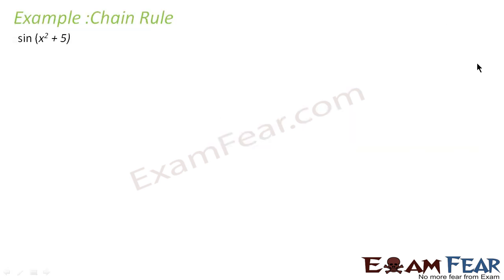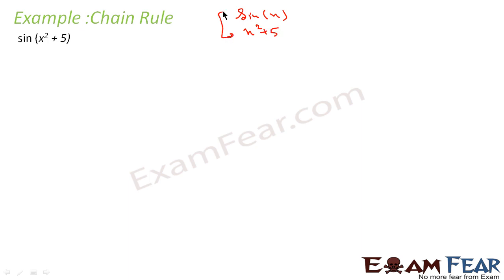Let's take some examples. The first example says sine of x squared plus 5. In this case, we know the derivative of sine x and we know the derivative of x squared plus 5. Both these we know, but we don't know the derivative of sine of x squared plus 5. And if you see, this is nothing but a composite function.